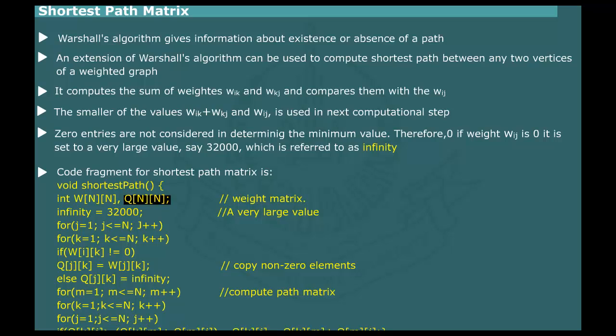The code fragment for computation of shortest path is listed in figure. A temporary array q is used to store results of computations. First, the non-zero elements of the weight matrix w are copied into q. Then, the zero values are set to 32000, which represent infinity for the purpose of computation. It is assumed that graph is directed and that weights are non-negative values. N represents the number of vertices in the graph. Click here to watch the computation of shortest path matrix for the sample graph.